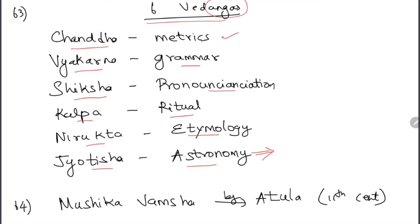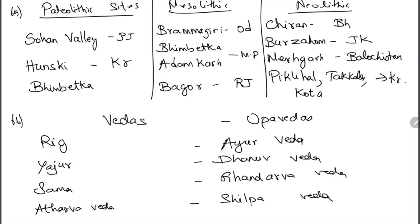Mushikavamsa was a book written by Atula in the 11th century. Some Paleolithic sites: Sohan Valley is in Rajasthan; Hunsgi is in Karnataka; Bhimbetka is in Madhya Pradesh. Mesolithic sites: Brahmagiri in Odisha; Bhimbetka and Adamgarh in Madhya Pradesh; Bagor in Rajasthan. Neolithic sites: Chirand in Bihar; Burzahom in Jammu & Kashmir; Mehrgarh in Balochistan (Pakistan).